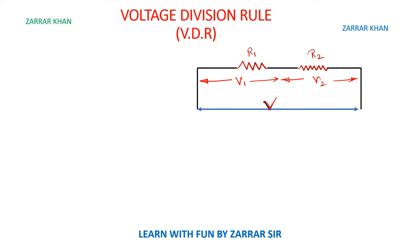It's a very simple way. V1 will be equal to — what is the resistance across V1? It is R1. So I'll write R1 upon R1 plus R2, into the total voltage.